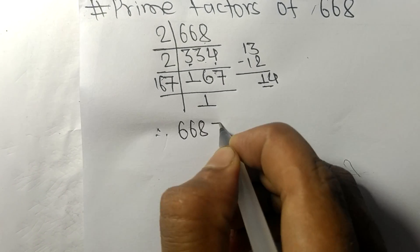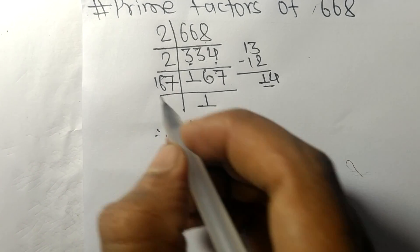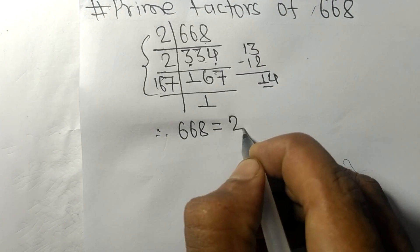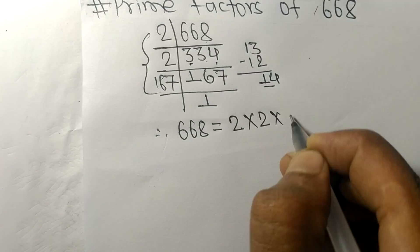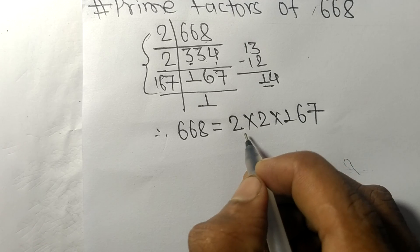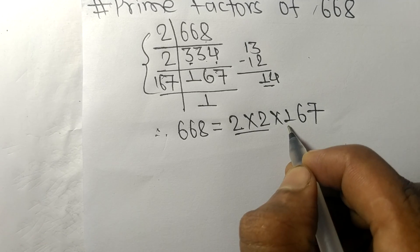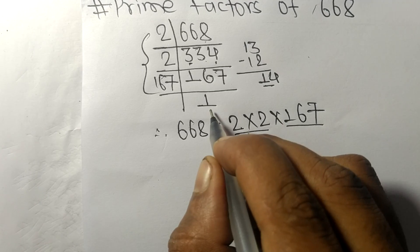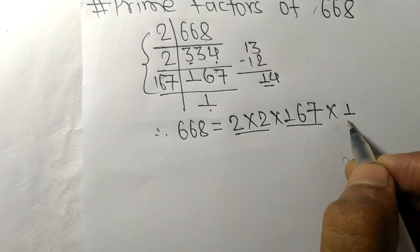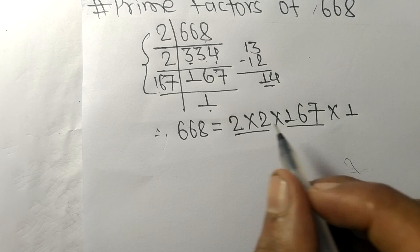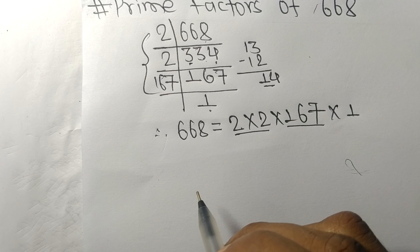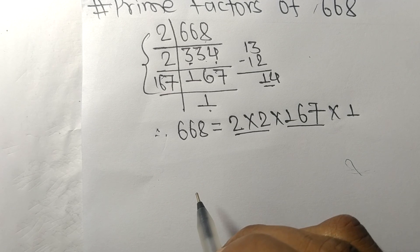Therefore, 668 is equal to 2 times 2 times 167. So the prime factors of 668 are 2, 2, and 167. That's all for today.